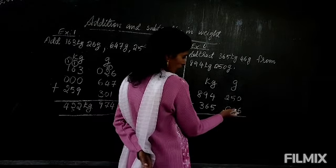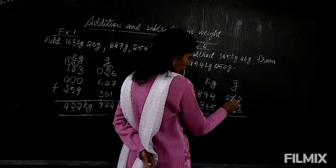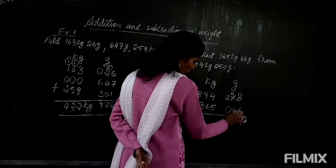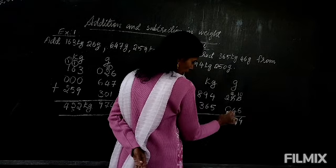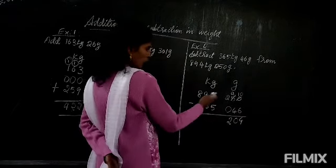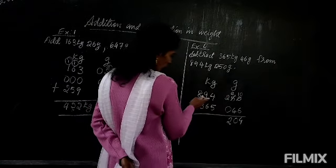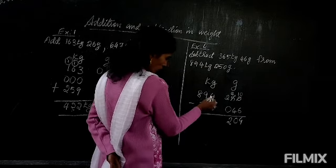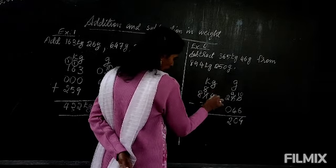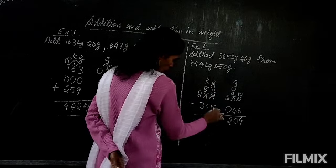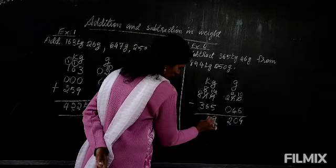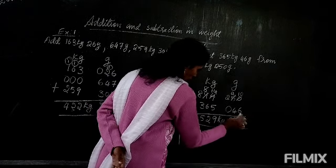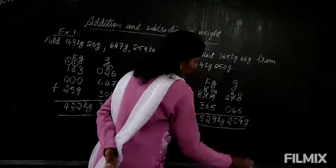Let's see the subtraction. We cannot minus 6 from 0, so we will borrow. From 5 we borrow, 4 will remain. 10 minus 6 is 4. 4 minus 4 is 0. 2 minus 0, 2. So here it is completed. We don't need to borrow from here. Now here we will borrow. From 4 we cannot minus 5. If you borrow 1, 8 will remain. This will be 14 now. 14 minus 5 will be 9. 8 minus 6 will be 2. 8 minus 3 will be 5. So the answer is 529 kilogram and 204 gram.